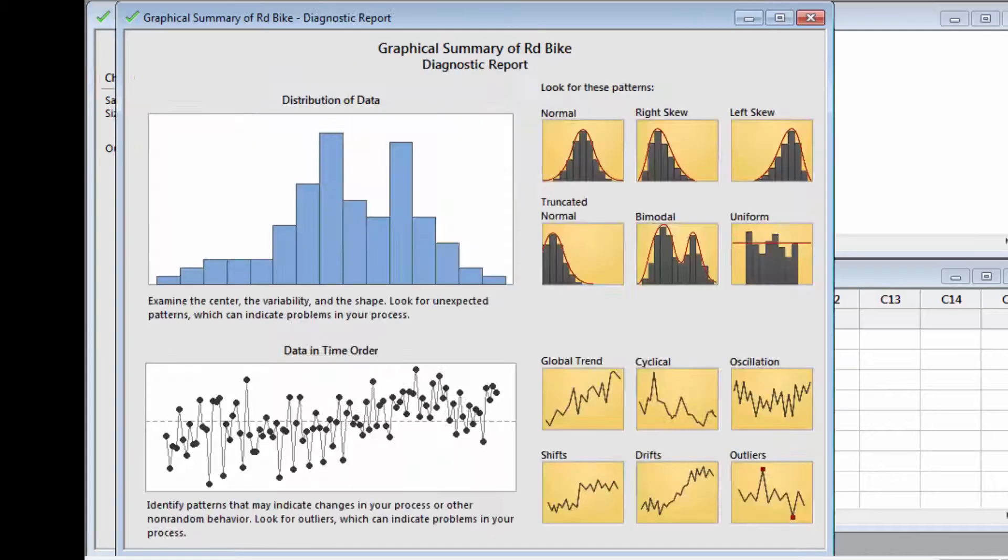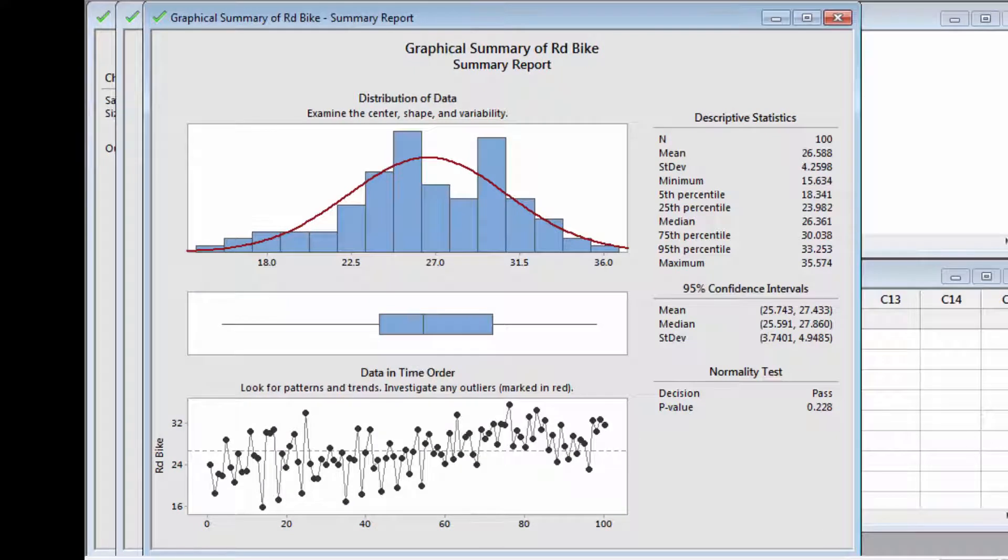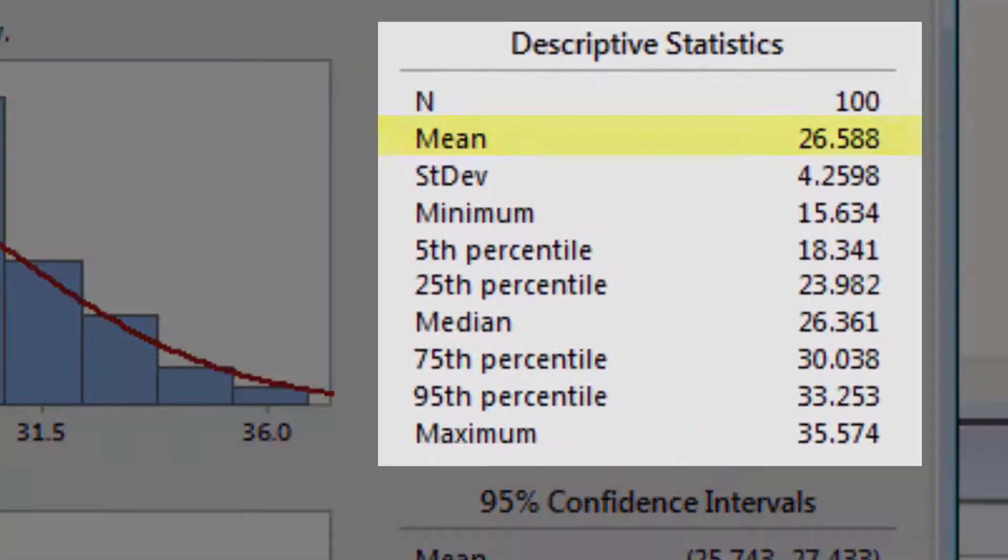The Assistant outputs a diagnostic report, a report card, and a summary report. The summary report shows that Joel's mean commute time is a bit over 26 minutes, good enough to reach the office on time.